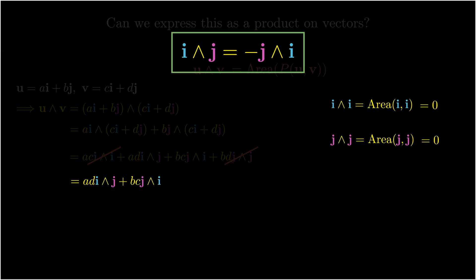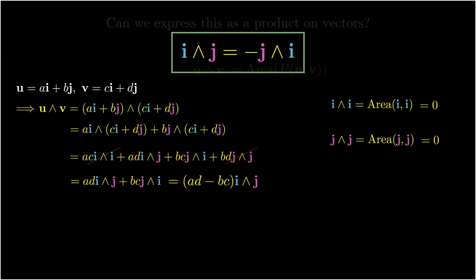So now if we return to our calculation here, namely that u∧v is ad(i∧j) + bc(j∧i), then switching the order, expressing everything in terms of i∧j, we get ad(i∧j) - bc(i∧j), which of course we can just write as (ad-bc)(i∧j). But that's exactly what the determinant of a 2×2 matrix is if the matrix is [a,b; c,d].